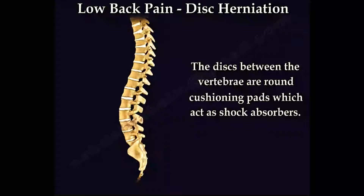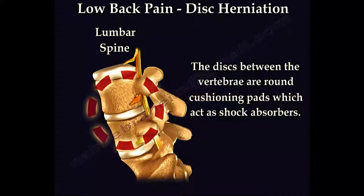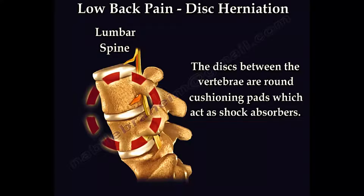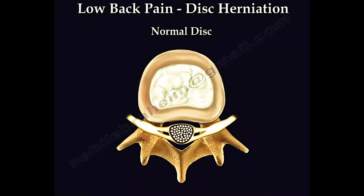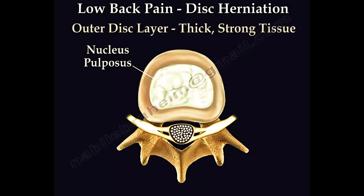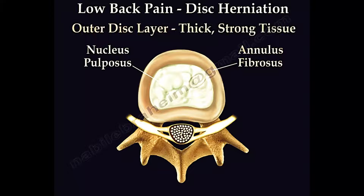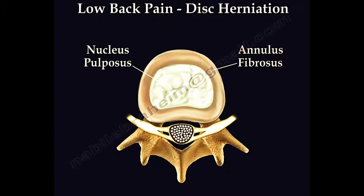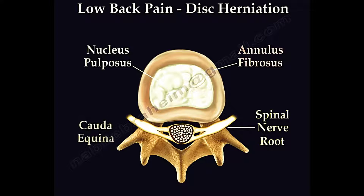The discs between the vertebrae are cushioning pads that absorb shock. In a normal disc, there are two layers: the soft gelatinous inner layer called the nucleus pulposus, and the outer thick strong layer called the annulus fibrosus. Behind the disc lies the spinal nerve root and the cauda equina.